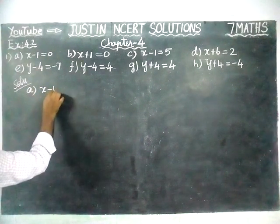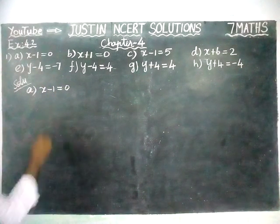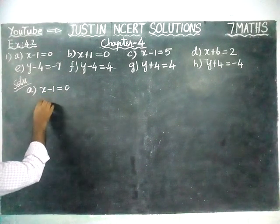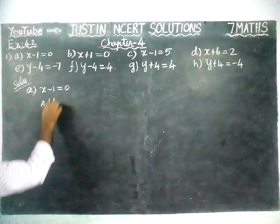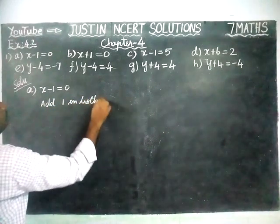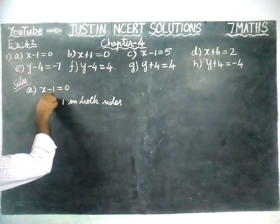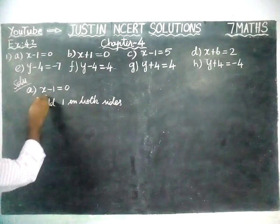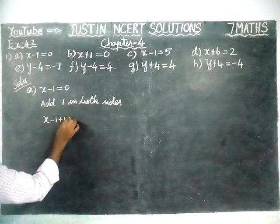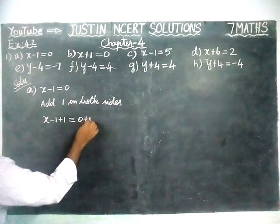Part a: x minus 1 is equal to 0. We are going to use the solving equation method. To cancel this minus 1, we are going to add 1 on both sides. If we add 1 on both sides, automatically this 1 will be cancelled and the variable will be separated. So x minus 1 plus 1 is equal to 0 plus 1. To balance this equation we have to add 1 on the right hand side also.